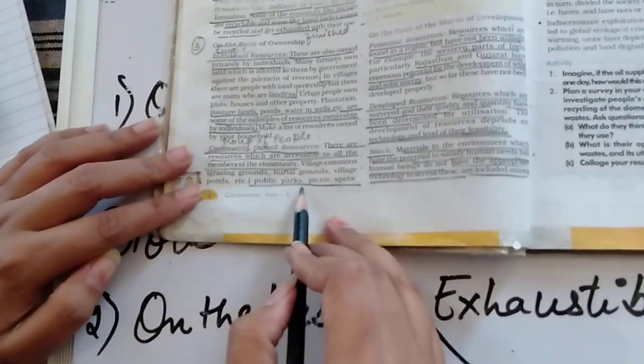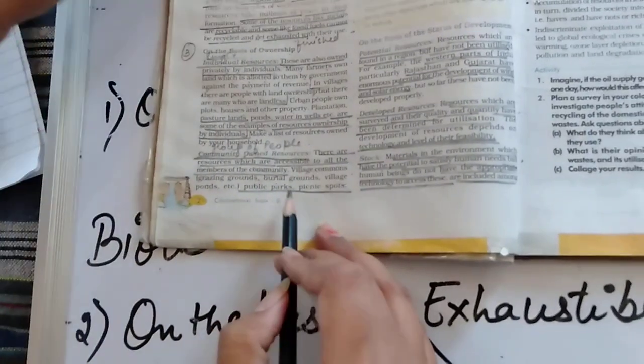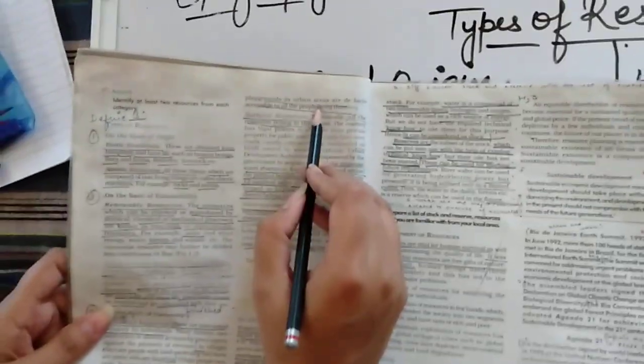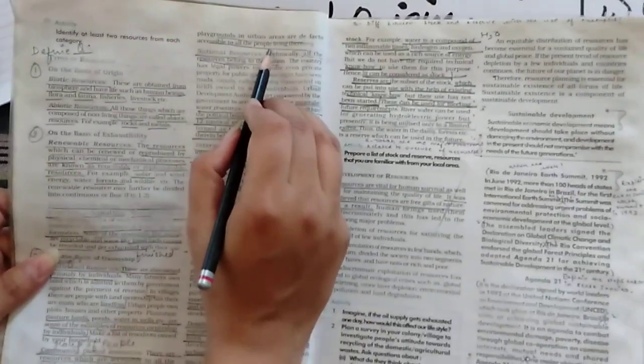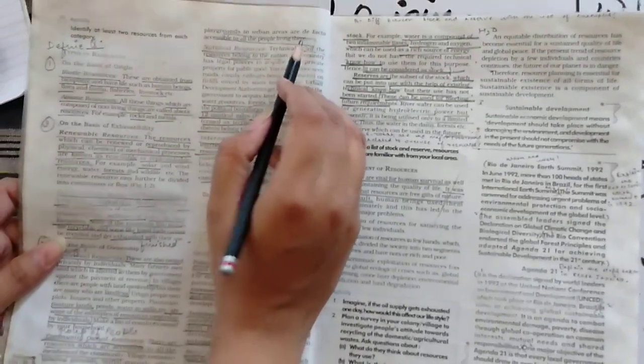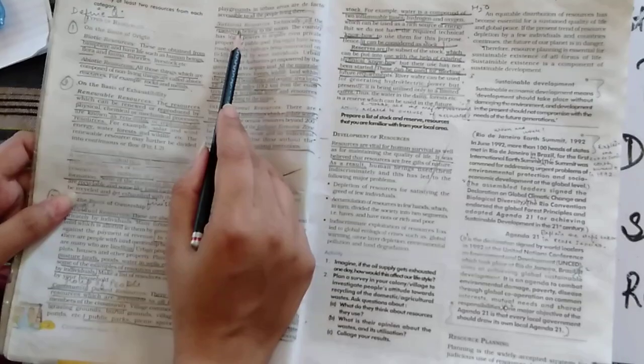And if we talk about urban places, public parks, picnic spots, playgrounds, these are the places which are accessible to the people living there. Now, let's talk about national resource.